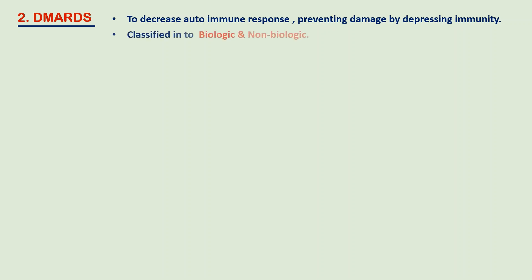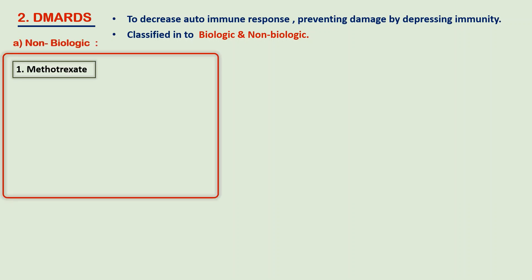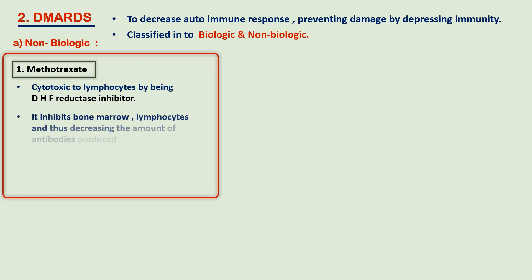DMARDs are further classified based on their origin — biological and non-biological. Among the non-biological DMARDs, the most significant is methotrexate. This drug is cytotoxic to lymphocytes, being a dihydrofolate reductase inhibitor. It inhibits bone marrow and lymphocytes and decreases the amount of antibodies produced.